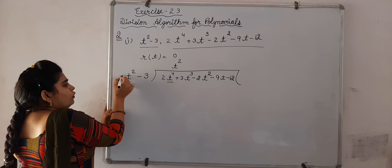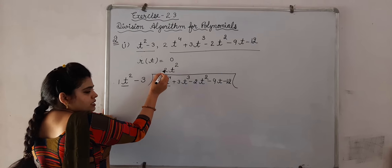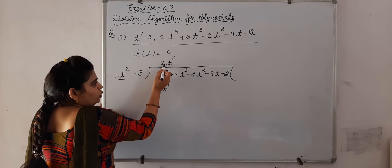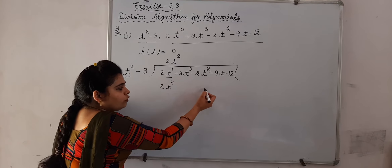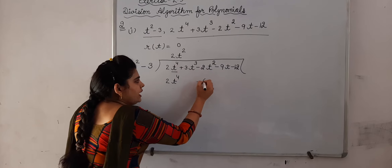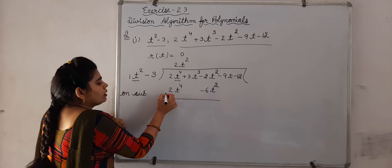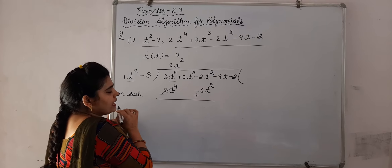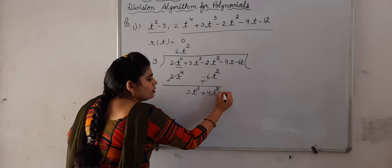Compare coefficients. The coefficient of t squared is 1 here, and the coefficient is 2 here, so we will multiply 1 by 2. Plus plus means it will be a plus. So we get 2t raised to power 4. Now multiply minus 3 by 2t squared to get a term in t squared, which gives minus 6t squared. On subtracting, we get minus 2t squared minus 9t remaining.